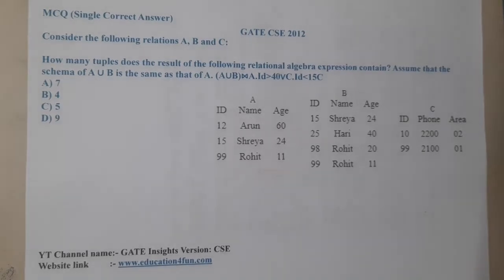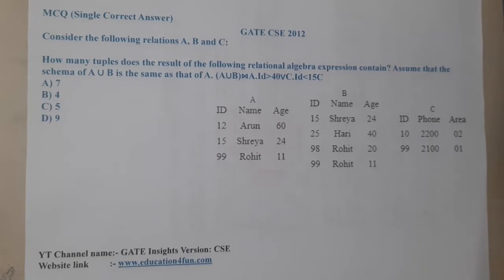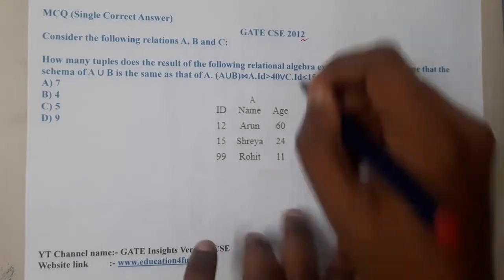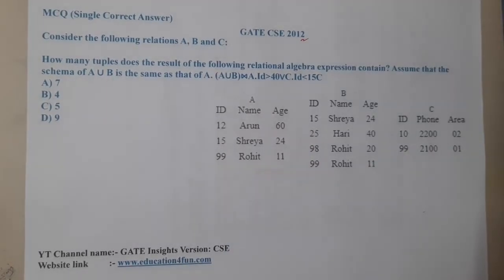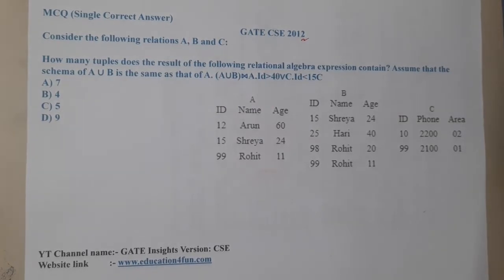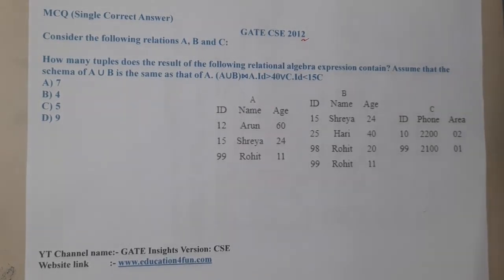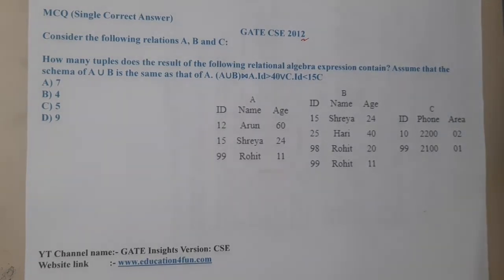Hello guys, welcome back to our next lecture. This question belongs to GATE CSC 2012. The given question says: consider the following relations A, B, and C. How many tuples does the result of the following relational algebra query contain?